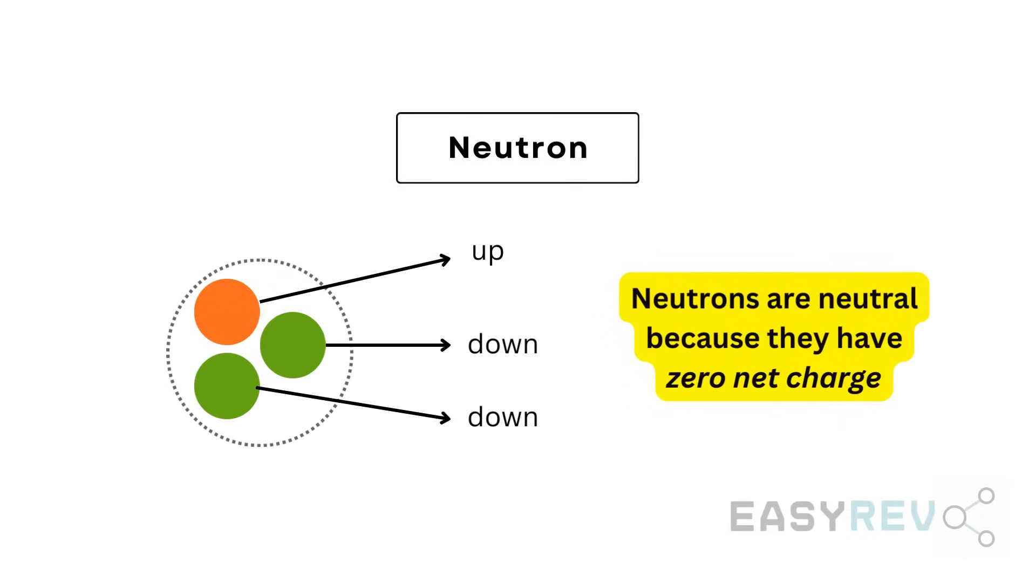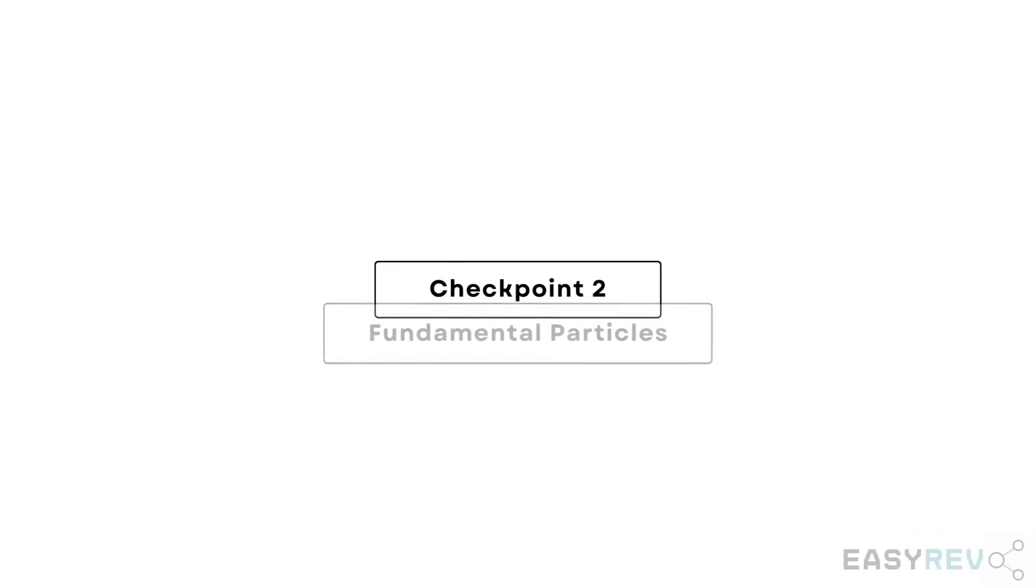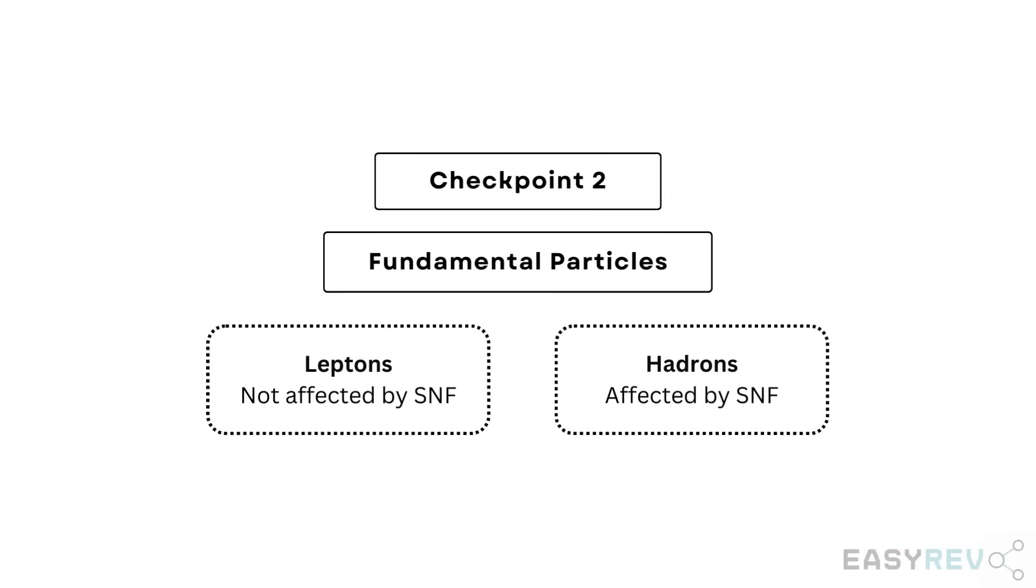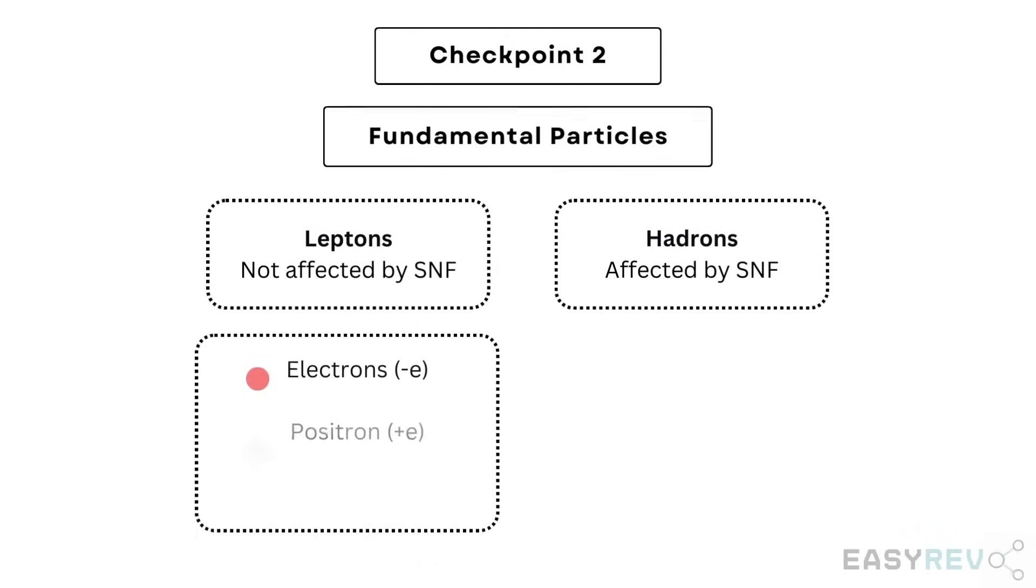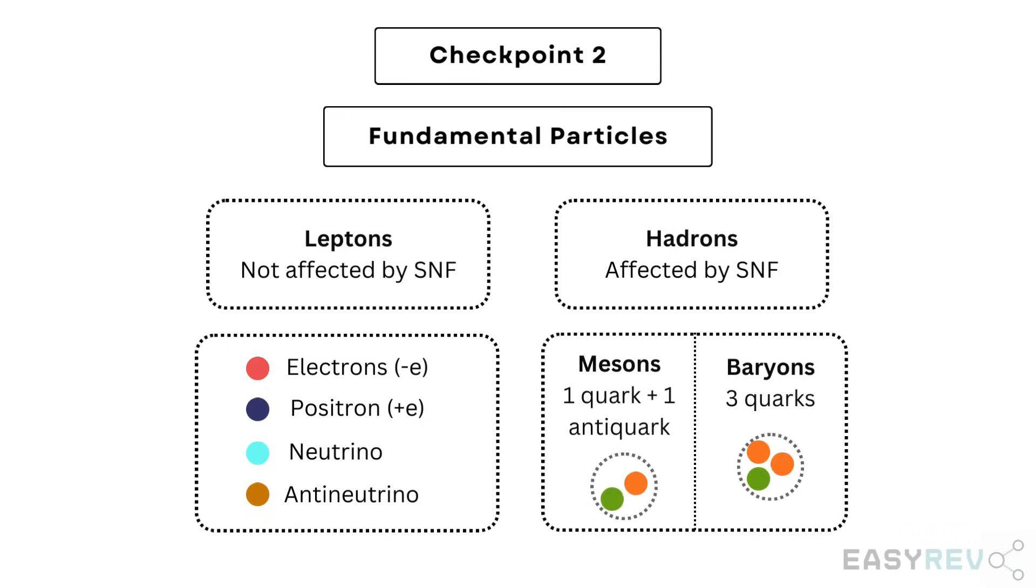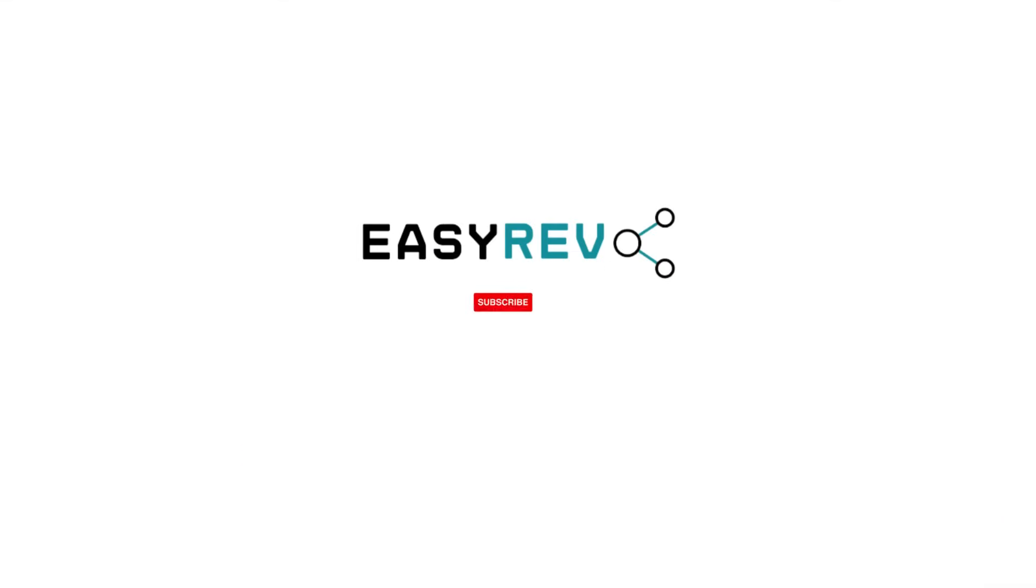And so, we're finally wrapped up with the second checkpoint. Let's do a quick overview. Here, we discussed the two categories of fundamental particles, leptons and hadrons. And then, we studied some of their components. For leptons, we studied the electron, positron, neutrino and antineutrino. And for hadrons, we talked about the two baryons, protons and neutrons and some of their core compositions. Thank you very much!